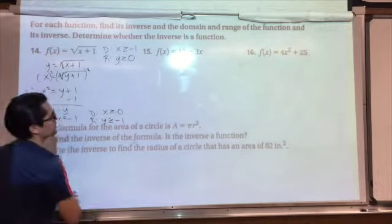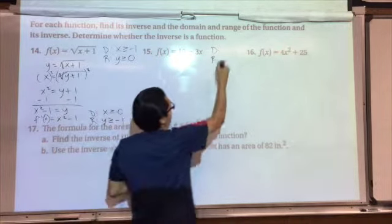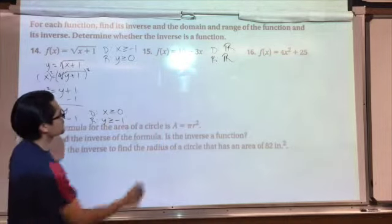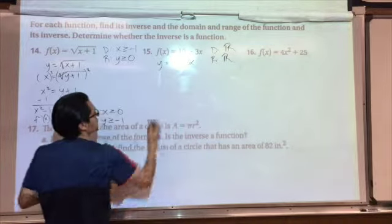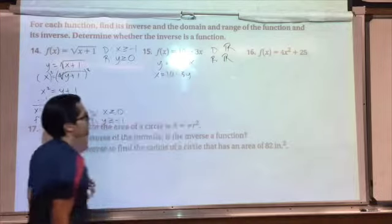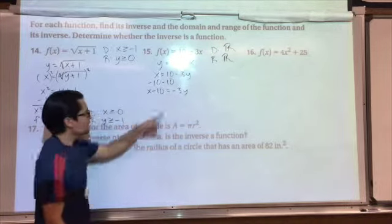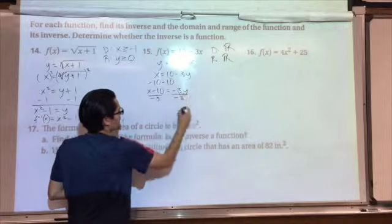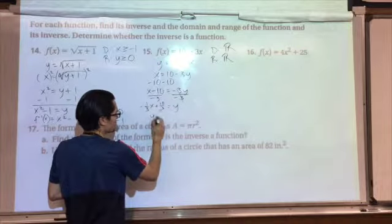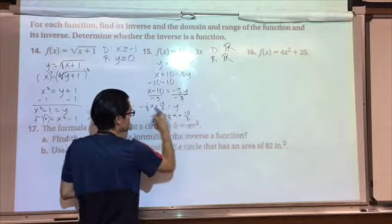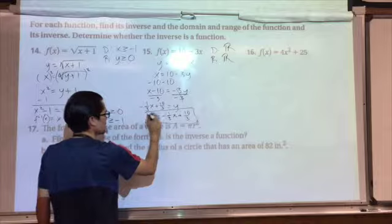Let's look at number 15. It's a linear function — 10 minus 3x. You don't have to worry about any restrictions here. The domain is all real numbers and the range is all real numbers. To find the inverse: switch f of x with y, then flip the x and y and isolate y. Subtract 10: x minus 10 equals negative 3y. Divide by negative 3: y equals negative one-third x plus 10 thirds. Write that in inverse function notation as f inverse of x.